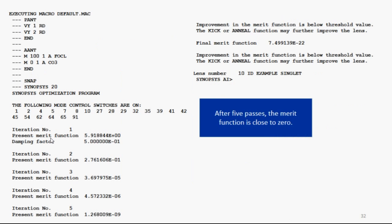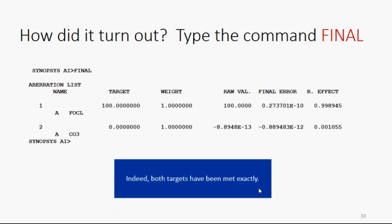Now click the Run button, and this thing runs. The merit function comes down, and it's pretty close to 0. And we want to see how did it turn out. So, you type the command FINAL in the command window. And you see it's got two aberrations, and they both met their goals. The focal length came out to 100, and the coma came out to 0. It's close enough for our purposes.